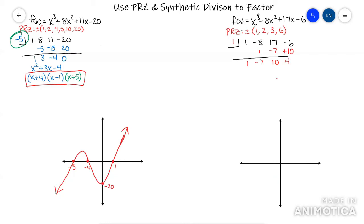OK. On this one, when I ran 1, I got a remainder. So that means 1 is not one of the zeros. It's not one of my x-intercepts. I need to try a different number. So let's try 3.